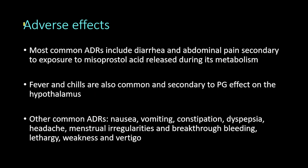The most common adverse effects of misoprostol include diarrhea and abdominal pain, secondary to exposure to misoprostol acid released during its metabolism. Fever and chills are also common, secondary to the prostaglandin effect on the hypothalamus. Other common adverse drug reactions include nausea, vomiting, constipation, dyspepsia, headache, menstrual irregularities, menstrual breakthrough bleeding, lethargy, weakness, and vertigo.